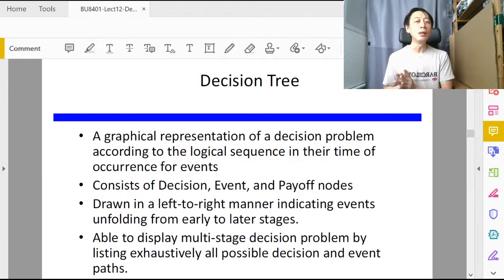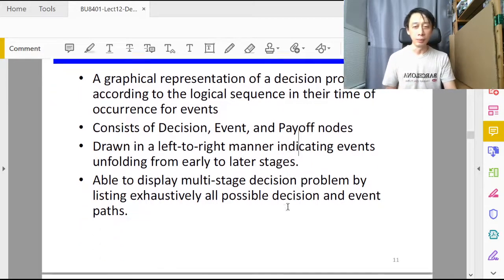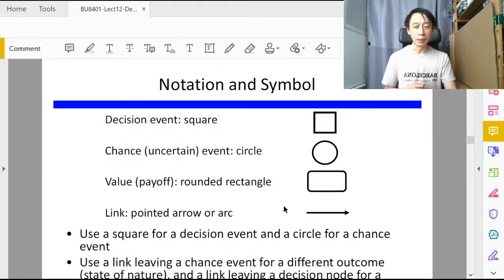The later or the more to the right that a particular node is being drawn in the decision tree will correspond to an event that occurs in the later part of the timeline. So a decision tree has three elements: decision node, an event node, and a payoff node, and then they are connected by lines that don't form a circle.